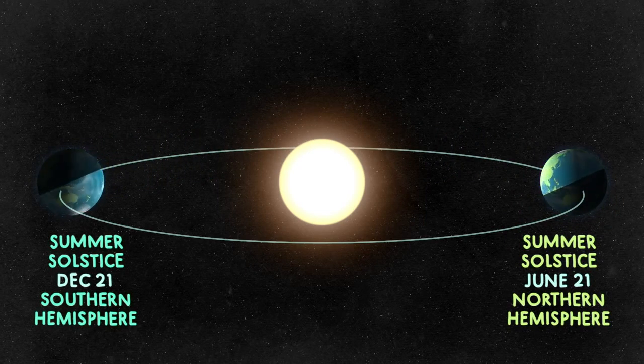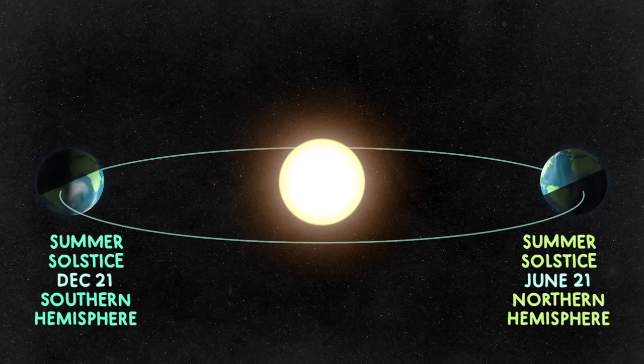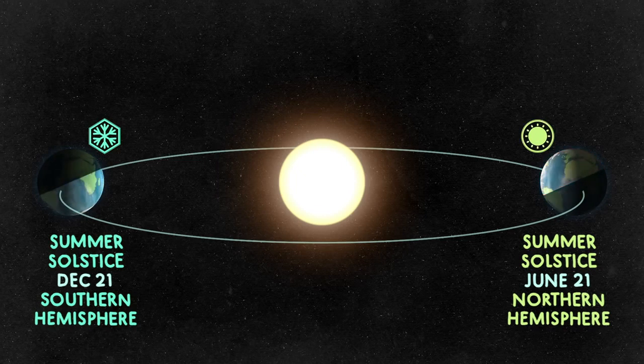This is because, as the Earth revolves, the northern hemisphere ends up tilted away from the Sun in the winter and toward the Sun in summer, which puts the Sun more directly overhead for longer amounts of time.